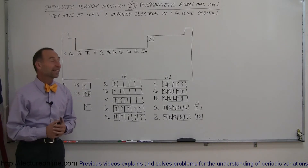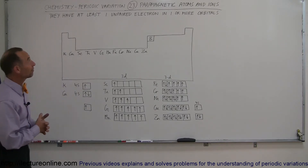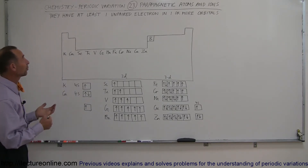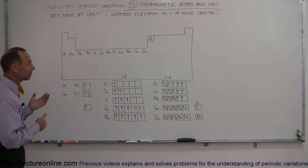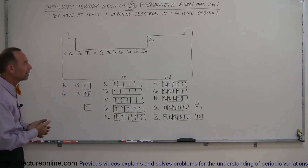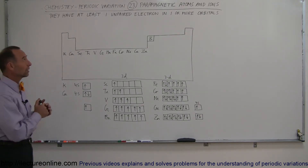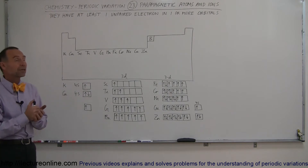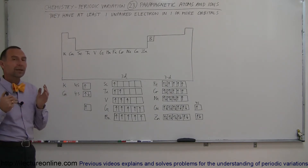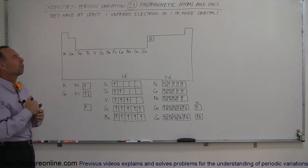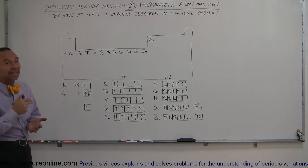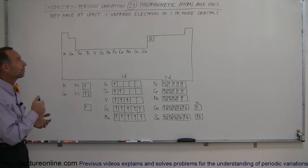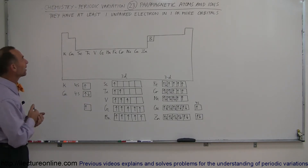Welcome to Electron Online. Here's our last video in this series where we look at the periodic variation for different kinds of properties of atoms. In this case we're going to take a look at the paramagnetic property of atoms and ions. Paramagnetism, or paramagnetic atoms and ions,